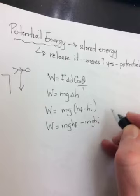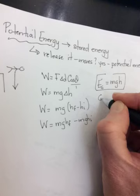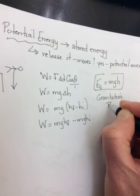This Mgh is actually called the gravitational potential energy. So it's Eg, and it's equal to Mgh, gravitational potential energy.